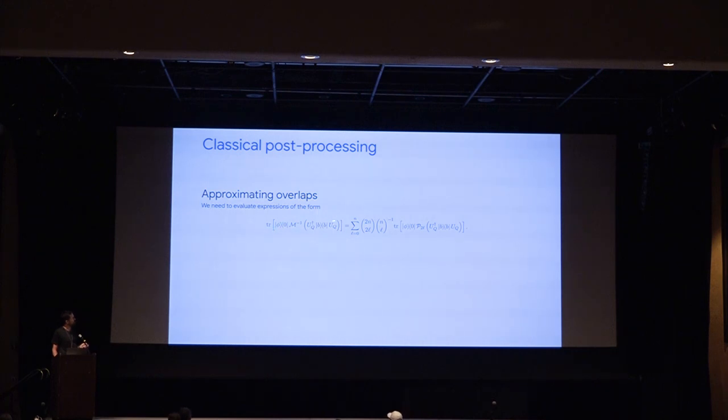Where that's some Slater determinant that comes from our classical algorithm, and then we applied the inverse channel to the sample that came from our shadow protocol. So how do we calculate quantities that look like this? Well, the first thing to note is that if this projector wasn't here we would really know how to do that already.